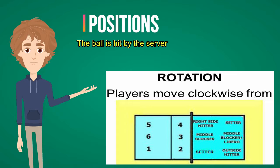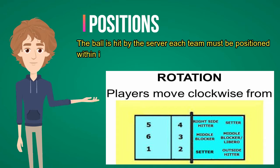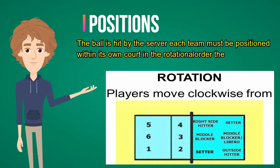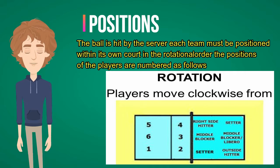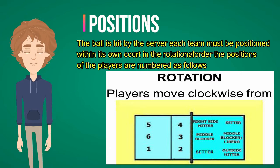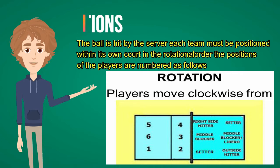Positions. When the ball is hit by the server, each team must be positioned within its own court in the rotational order. The positions of the players are numbered as follows: the three players along the net are front row players and occupy positions 4, 3, and 2. The other three players are back row players, occupying positions 5, 6, and 1.